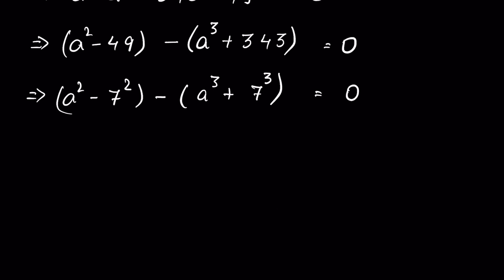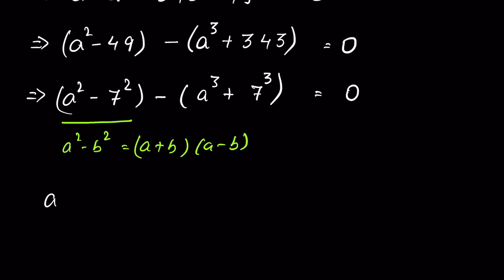The expression a squared minus 49 is a difference of squares, in the form a squared minus b squared, which equals (a + b)(a − b). So we write it as (a + 7)(a − 7).